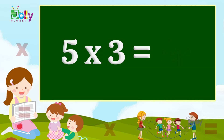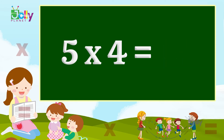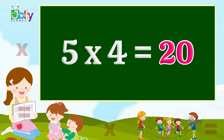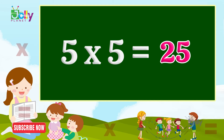Five threes are fifteen. Five threes are fifteen. Five fours are twenty. Five fours are twenty. Five fives are twenty-five.